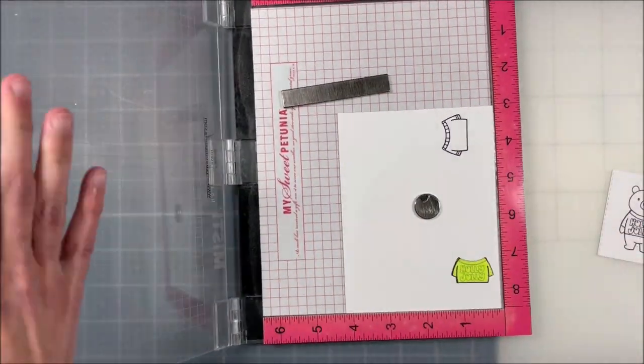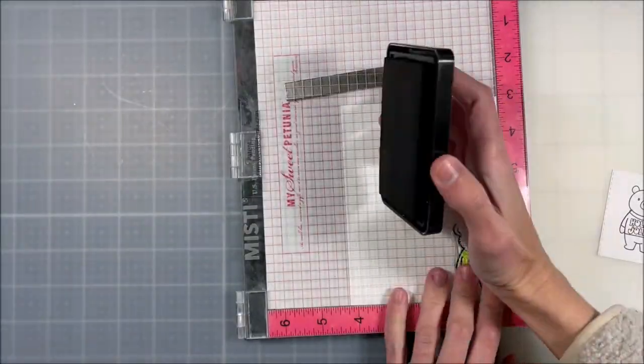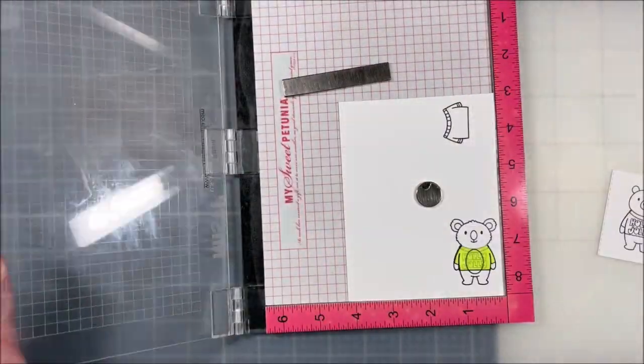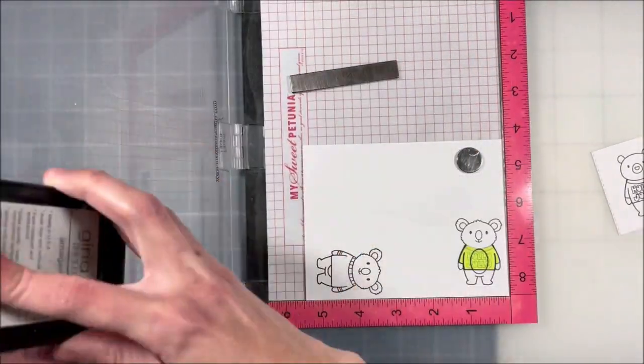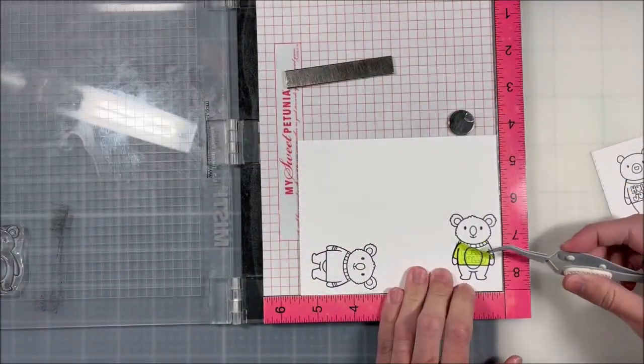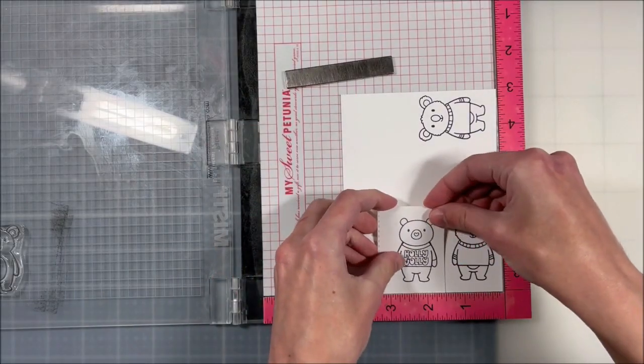I also have the mask that I created off camera and then I'm just going to put that down onto my stamped shirt. Then stamp down my koala after I line it up with my little template. That template is great because you can use it over and over and it just makes lining things up a little bit easier.